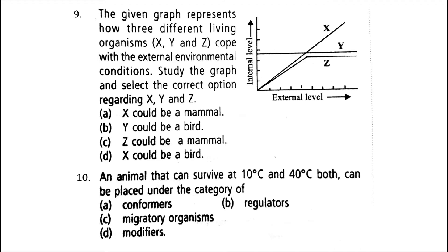Next: an animal that can survive at both 10°C and 40°C can be placed under the category of — the correct answer is option B: Regulators.